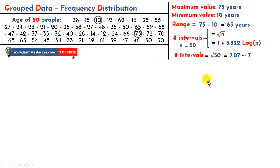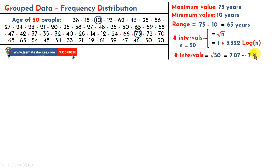We can also use the second formula, which is Sturges' rule. By replacing n with a value of 50, we will also get a result of approximately 7 intervals. So you can use either of these two formulas. I will go with the square root formula.